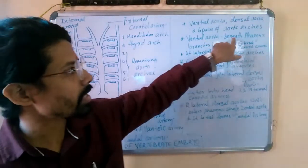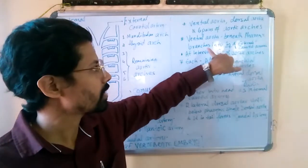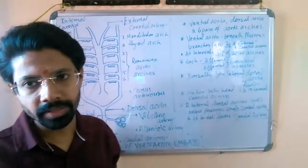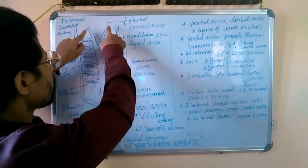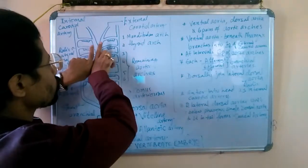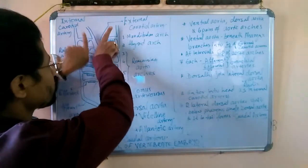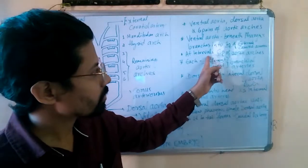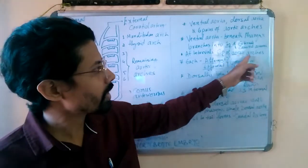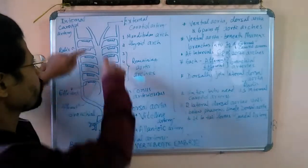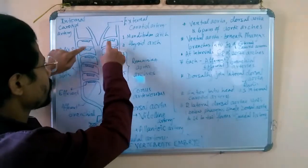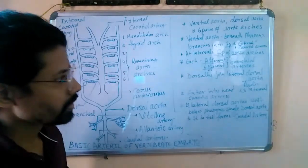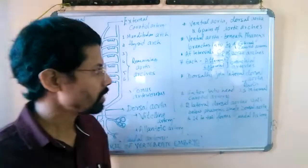The ventral aorta is present beneath the pharynx, and it branches into one pair of external carotid arteries. Looking at the diagram, the external carotid arteries — one pair means two — are visible here. Then, at intervals, six pairs of aortic arches arise from the ventral aorta itself. You can see these six pairs, one through six, on both left and right sides, giving a total of six pairs.